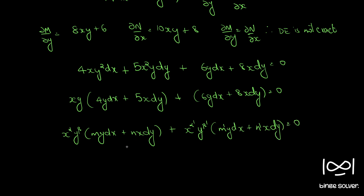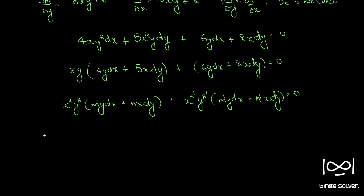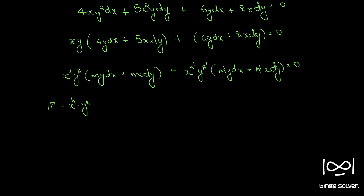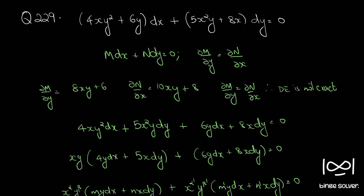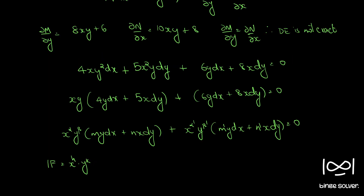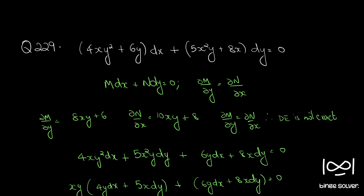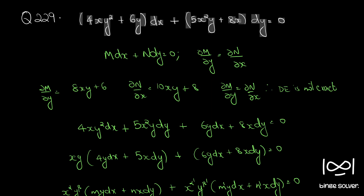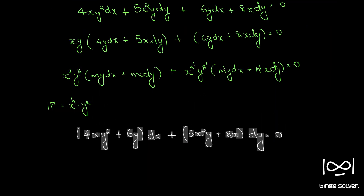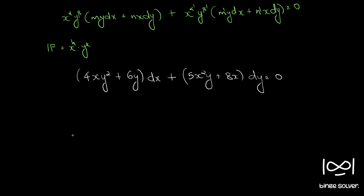For such questions, the integrating factor will be of the form x^h · y^k. If x^h · y^k is the integrating factor, we can multiply throughout and use the exactness condition ∂M/∂y = ∂N/∂x to find h and k. Multiplying throughout, we get 4·x^(h+1)·y^(k+2) + 6·x^h·y^(k+1) in the M term.